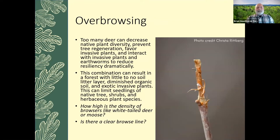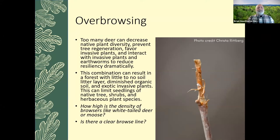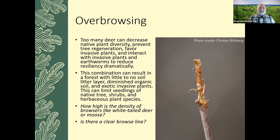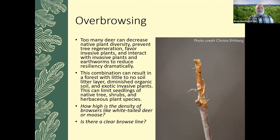You also want to look at whether you have overbrowsing. Too many deer can decrease your native plant diversity, prevent tree regeneration by primarily eating oak seedlings and saplings, favor invasive plants, and interact with invasive plants and earthworms to reduce climate resiliency dramatically. This combination can result in a forest with little to no soil litter layer, diminished organic soil, and exotic invasive plants which can limit seedlings of native tree, shrub, and herbaceous plant species. When out in your woods, ask: how high is the density of browsers like white-tailed deer or moose? Are you seeing deer scat, tracks in the mud, or a clear browse line? You can tell whether it's deer or moose primarily by how high off the ground the vegetation is browsed.